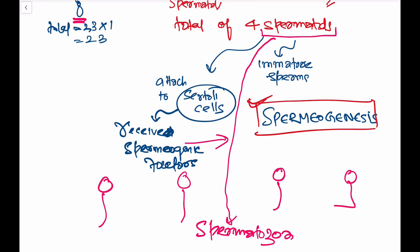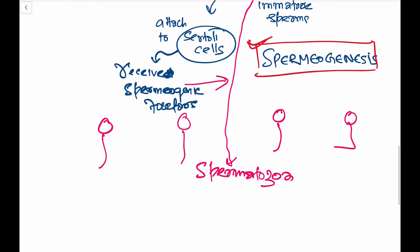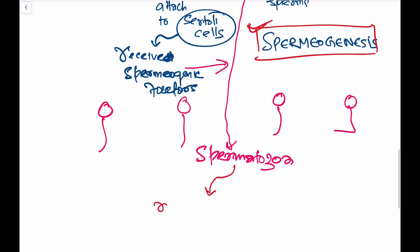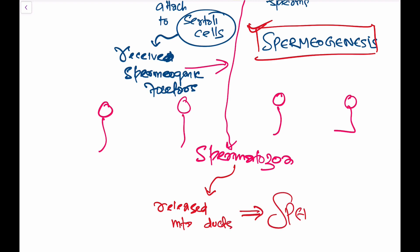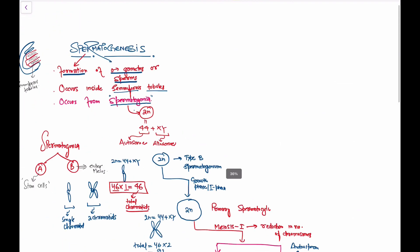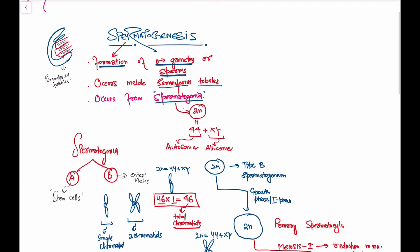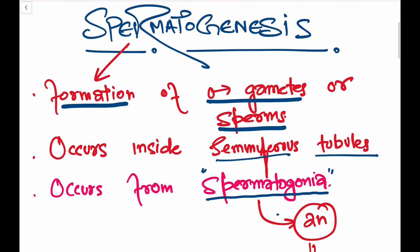After spermiogenesis, these spermatozoa are released into the ducts. This release process is called spermiation. That covers the full topic of spermatogenesis.